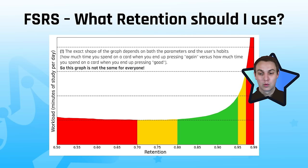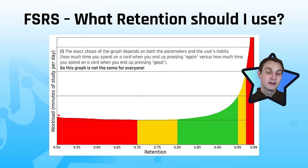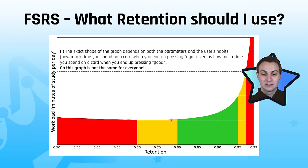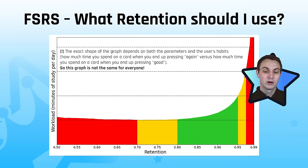What retention should you use? Workload increases non-linearly as desired retention increases — especially in the high range, going from 95% to 97% to 99% adds to workload exponentially. Interestingly, setting workload to 50% is actually higher workload than 70–80% because you're forgetting things so often you have to re-study them. 70%, 80%, and even 85% are roughly similar workloads. I wouldn't recommend below 80%. I'm personally staying in the 90–95% range — 90% feels safe and it feels better to get 9 out of 10 right. Anything above 95% significantly increases workload.